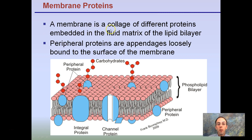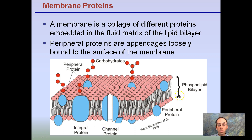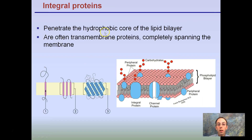Membrane proteins: membranes have an embedded portion in the lipid bilayer. Peripheral proteins are loosely bound to the surface of the membrane — they're on the outside, not going all the way through. They can be important for recognition. Integral proteins and channel proteins pass the entire way through the phospholipid bilayer. These peripheral, integral, and channel proteins can move through the lipid bilayer — just like you moving through a busy crowd. Integral proteins penetrate the hydrophobic core, often as transmembrane proteins completely spanning the membrane.